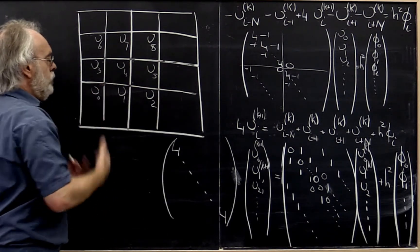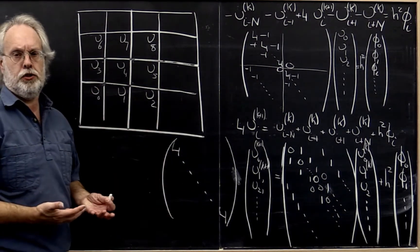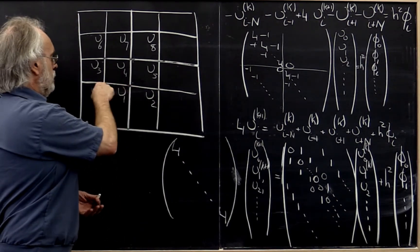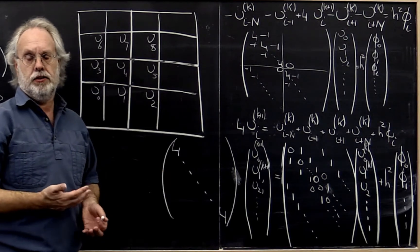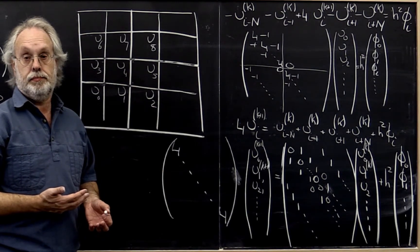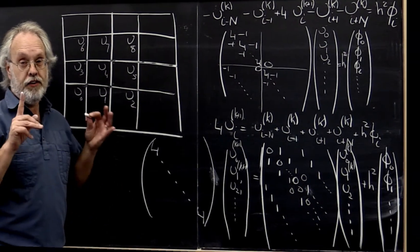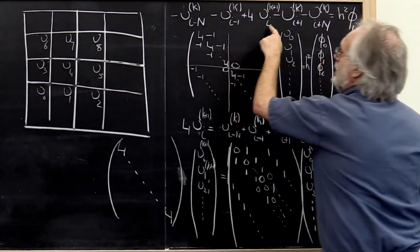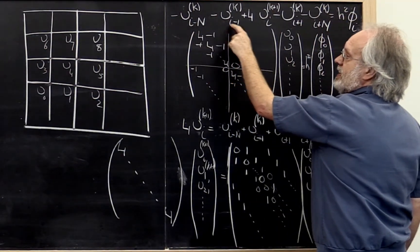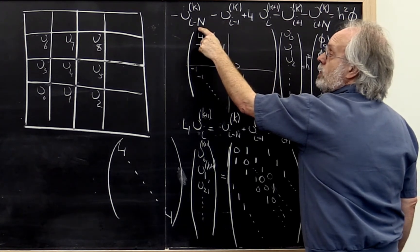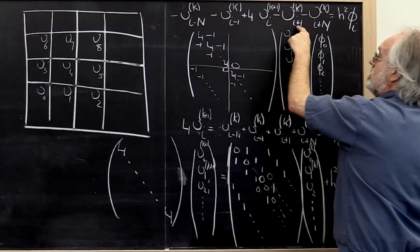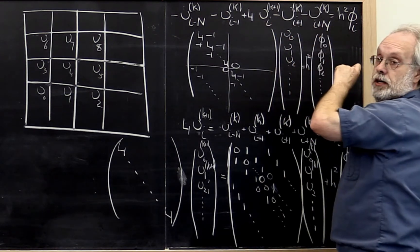This value is moving towards the value that it ultimately should be. Therefore I should use it when I get here because presumably it's a better value. Now if you think about that, what that means is that the values that have an index that is smaller have already been updated but the values that have an index that's larger have not yet been updated.